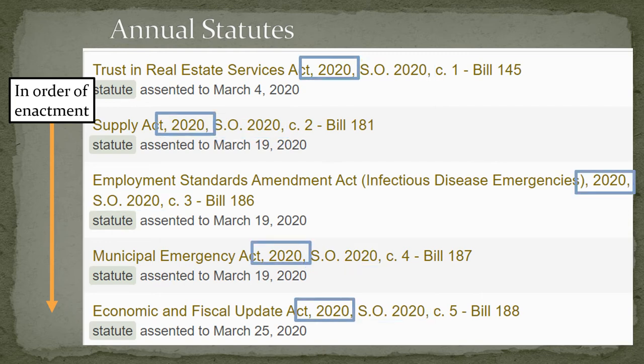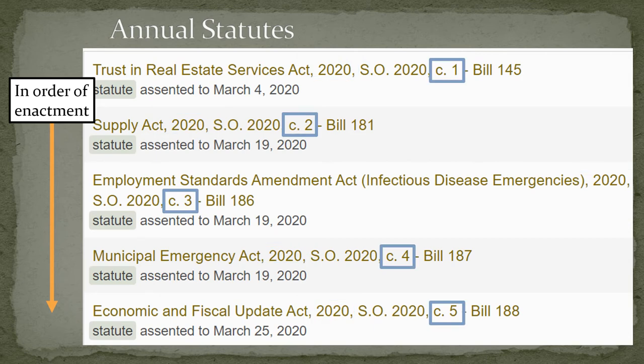You'll notice that with annual statutes, the title will always include the year of enactment. If you are referencing legislation by title only, without S.O. and chapter number, you will still include the year — otherwise the title will be incomplete. The year would also be italicized like the rest of the title. You'll see that the statutes are numbered in order of enactment, specifically when the statute received royal assent after its three readings. They are organized by chapter number within the annual volumes — that's what C stands for.